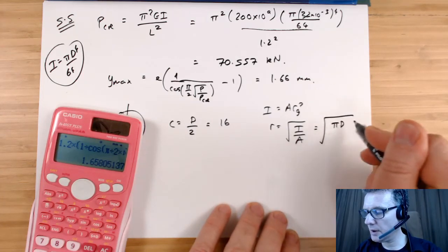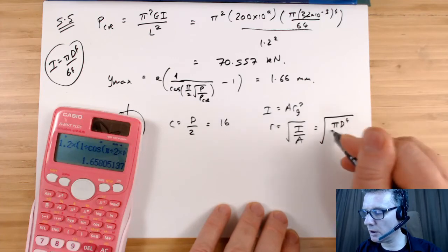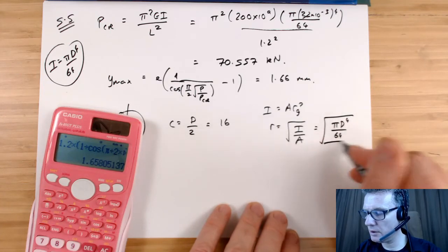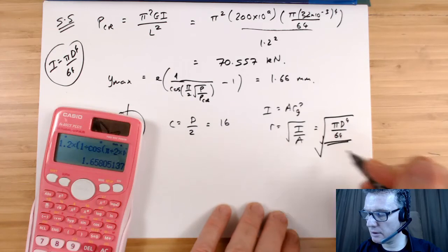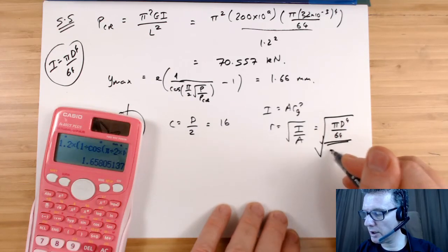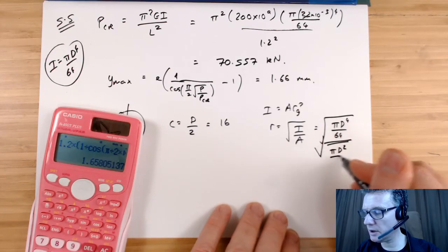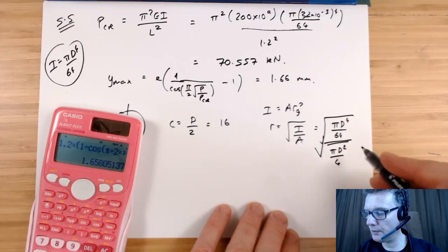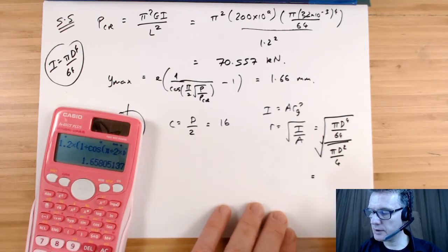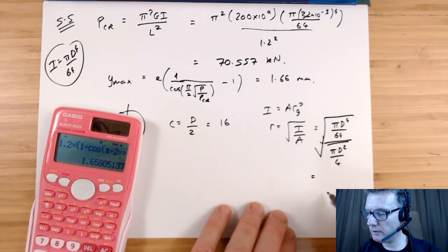You could substitute algebraically here and then see what you got. So I is πD⁴ over 64, area is πD² over 4, so we end up with D, the π's cancel, and then I've got 1/64 divided by 1/4, which means that becomes 1/16.